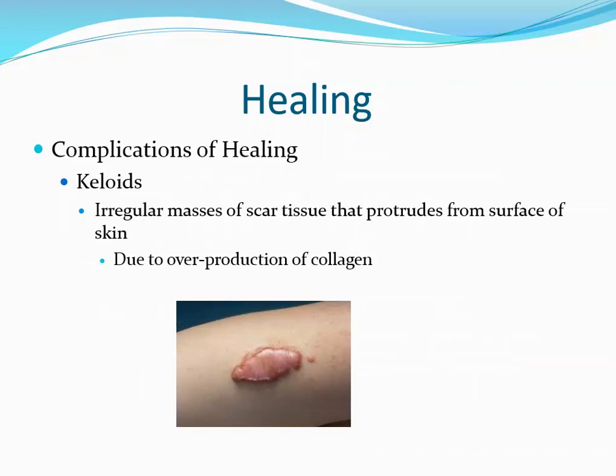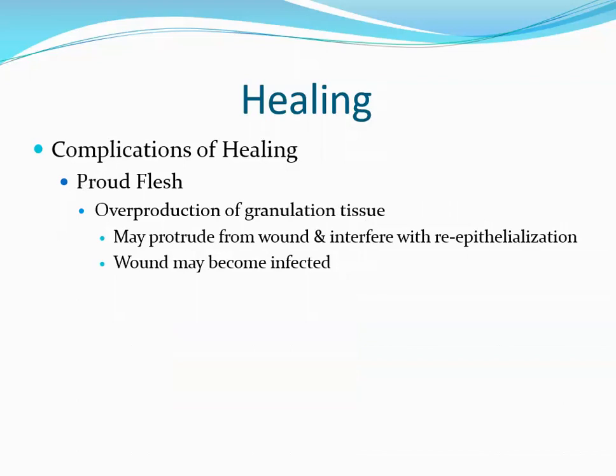Another complication is keloids — an irregular mass of scar tissue that protrudes from the surface of the skin, usually the result of overproduction of collagen during the healing process. You can also get proud flesh — an overproduction of granulation tissue that may protrude from the wound surface, interfering with re-epithelialization, and the wound may become infected.